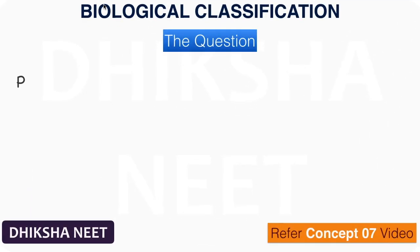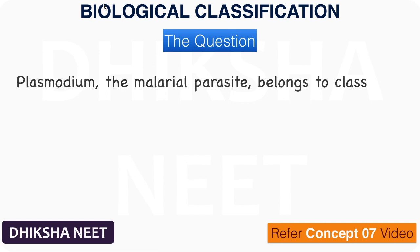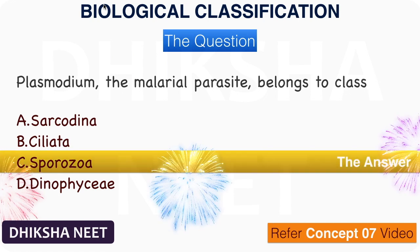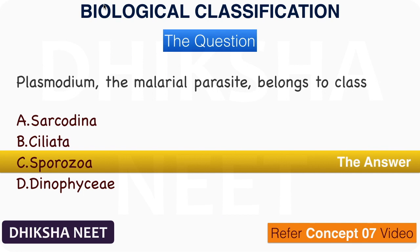The question: Plasmodium, the malarial parasite, belongs to class — A. Sarcodina, B. Ciliata, C. Sporozoa, D. Dinoflagellata. The answer is option C. Sporozoa.